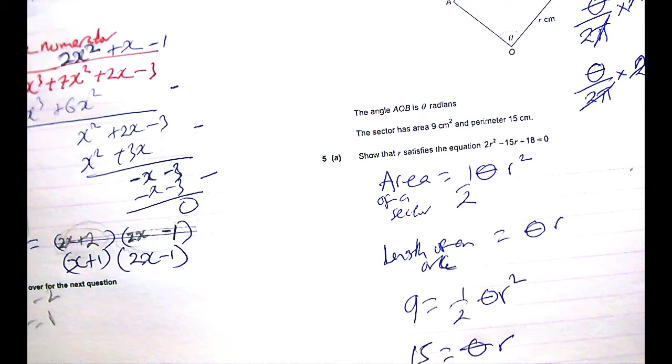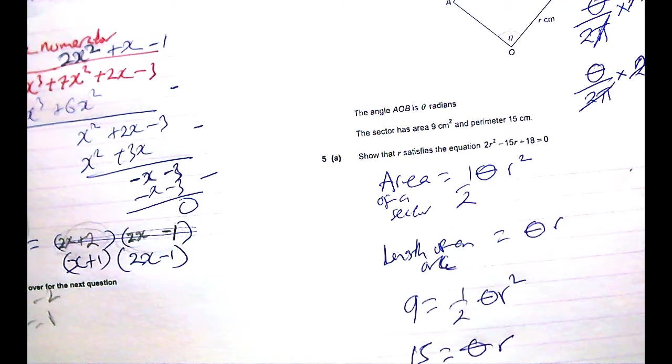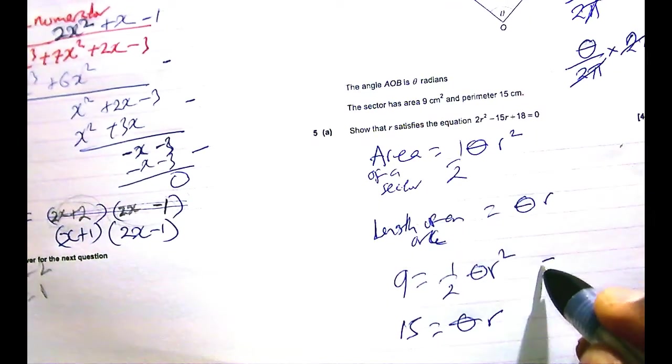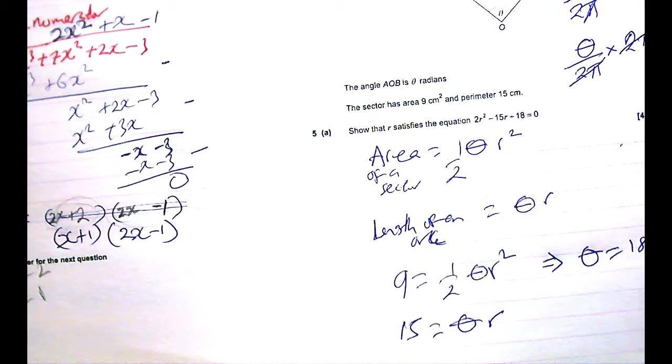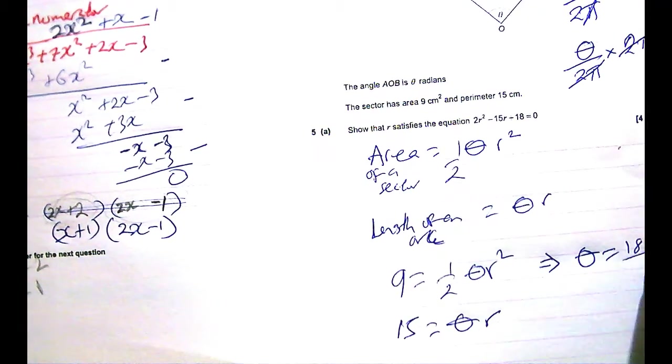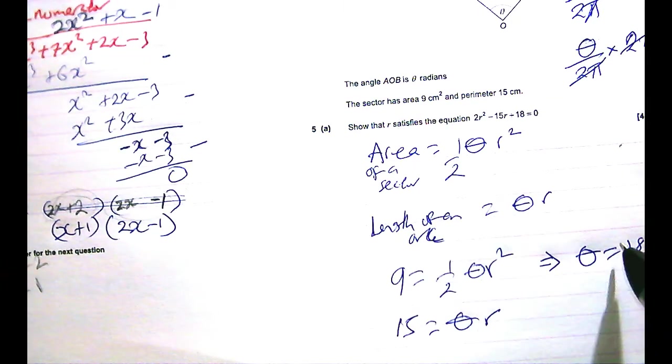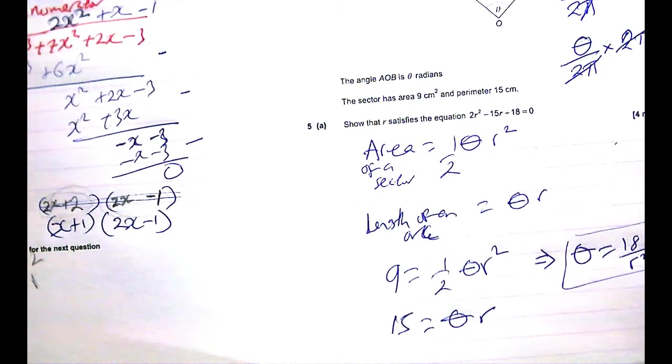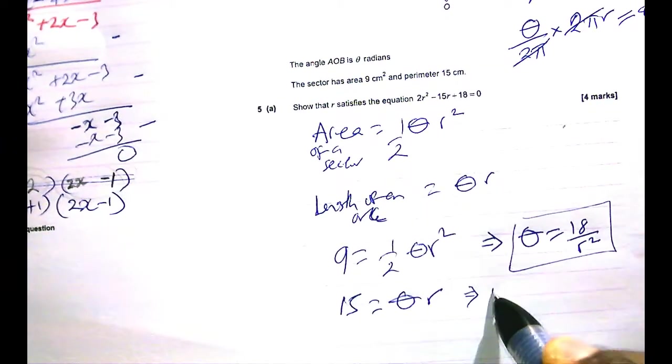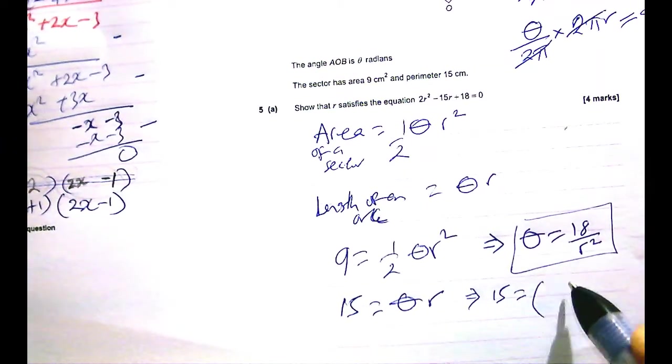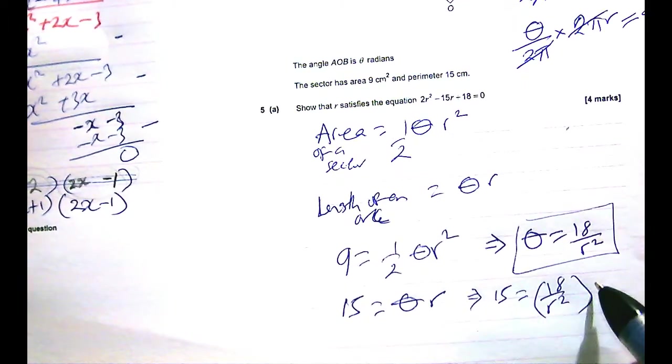We just want to have one equation now involving R. So the best thing to do is make θ the subject of the formula in the first one and throw it into the second equation. So the first one now tells me that θ is 18 over R². So if I throw in this substitution of θ into the second equation, this would mean that 15 equals, where I see θ, I write 18 over R² times R.